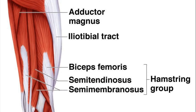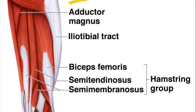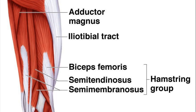On the lateral aspect you will find the iliotibial tract, or the iliotibial band, known as the IT band. On the medial aspect, a bit deeper, you are going to find the adductor magnus. You have the adductor longus and then the adductor magnus.